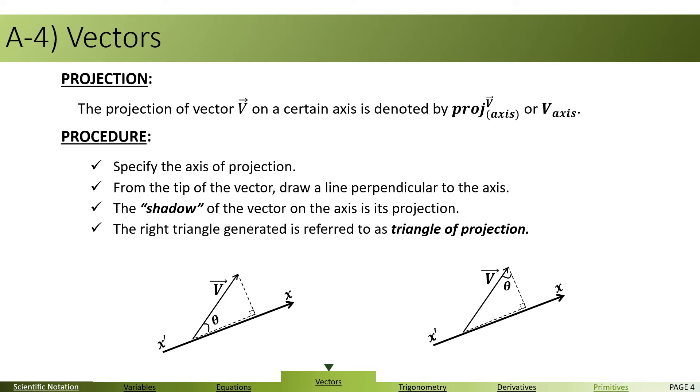The shadow of the vector on the axis is known as its projection. And the right triangle formed, which you can see here, or here, is known as the triangle of projection. In this triangle, choose either sine or cosine of a given angle, depending on what's given, to calculate.